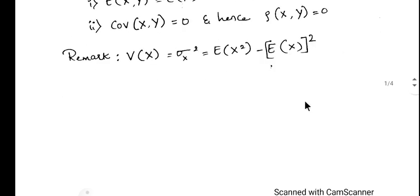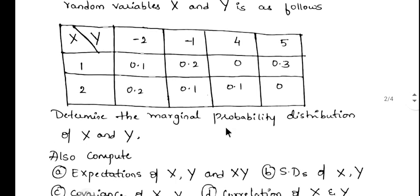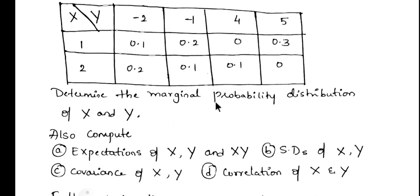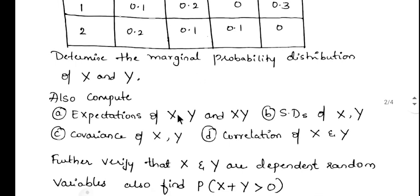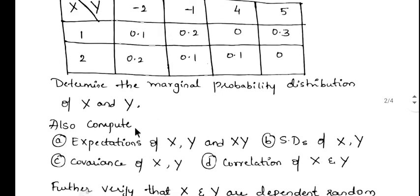Now we will solve example number 1. The joint probability distribution table for two random variables x and y is given. We are asked to calculate the marginal distribution, expectation of x, y, and xy, standard deviation of x and y, covariance of x and y, and correlation of x and y. Further, verify that x and y are dependent random variables and find P(x + y > 0).